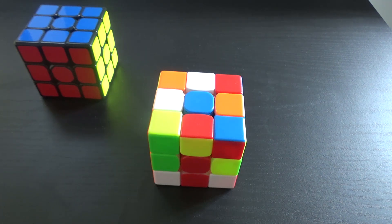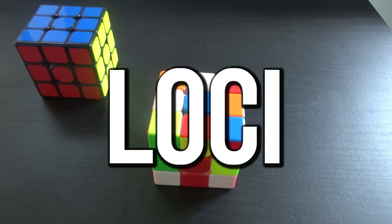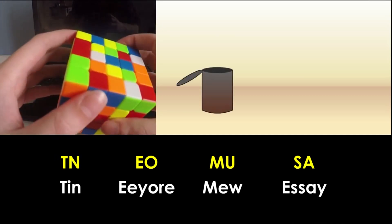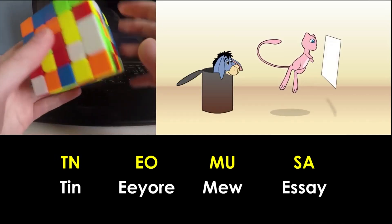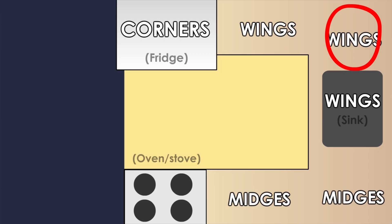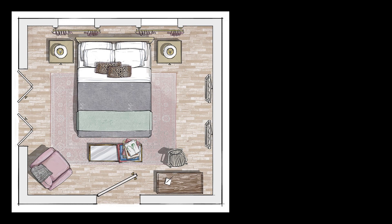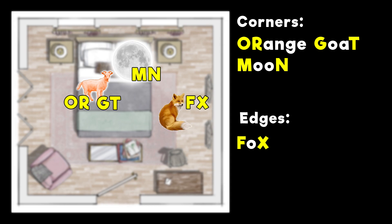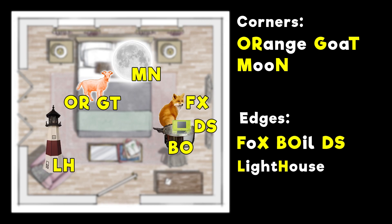Now how on earth do I memorize a whole bunch of random letters that don't mean anything? Especially when I'm doing something like 200 cubes. Well you can use something called the method of loci. But without going into it too much it's basically turning two letters into a word and turning those words into images that you place along a familiar route in your head. So in this case what I would imagine is orange goat moon for corners and then for edges fox boyle DS lighthouse knight.